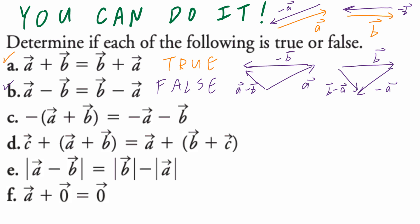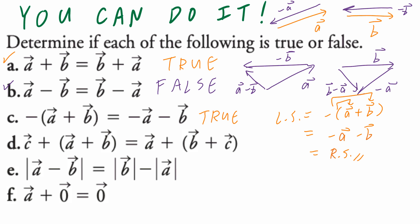Part C: negative, open bracket, vector A plus vector B, close bracket, equals negative vector A minus vector B. This one is true. You can look at the left-hand side and expand it: negative 1 times vector A is negative vector A, negative 1 times vector B is negative vector B — just like that.